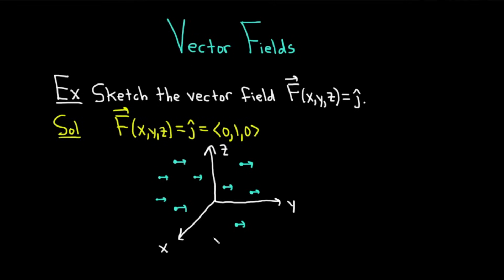The vector field is a function which, in this particular case, takes a point in space and spits out a vector. And the vector it spits out is this one here. It's j-hat with coordinates 0, 1, 0. Really interesting. Let's look at an example that is a little bit more challenging than this one.